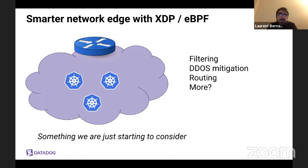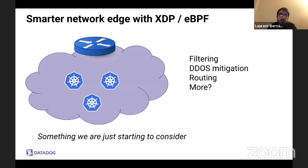So far, I've mostly mentioned how we leverage eBPF inside our clusters. But being a SaaS product, we get a lot of traffic to our infrastructure, and one of the challenges is getting traffic efficiently inside the clusters. We're really thinking that we should look into using eBPF to create a smarter and more efficient network edge — to do filtering, DDoS mitigation, routing, and maybe more. It's very new to us, something we're just starting to consider, but we'll probably invest some time into this.